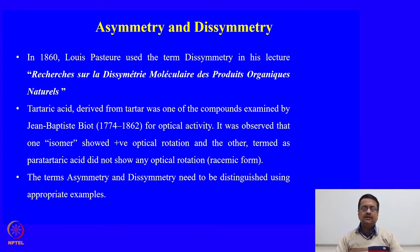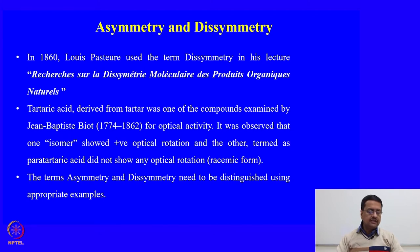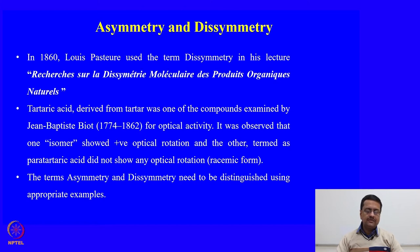There is a need to define these two terms and identify the difference between asymmetry and disymmetry. As early as 1860, Louis Pasteur used the term disymmetry in his lecture 'Recherches sur la disymétrie moléculaire des produits organiques naturels,' which essentially means that essential organic materials can have disymmetric molecules. Before Pasteur's identification of disymmetric molecules, tartaric acid derived from tartar was one of the compounds examined by Biot for optical activity. It was observed that one isomer showed positive optical rotation and the other isomer, termed para-tartaric acid, did not show any optical rotation, which means that was a racemic mixture.